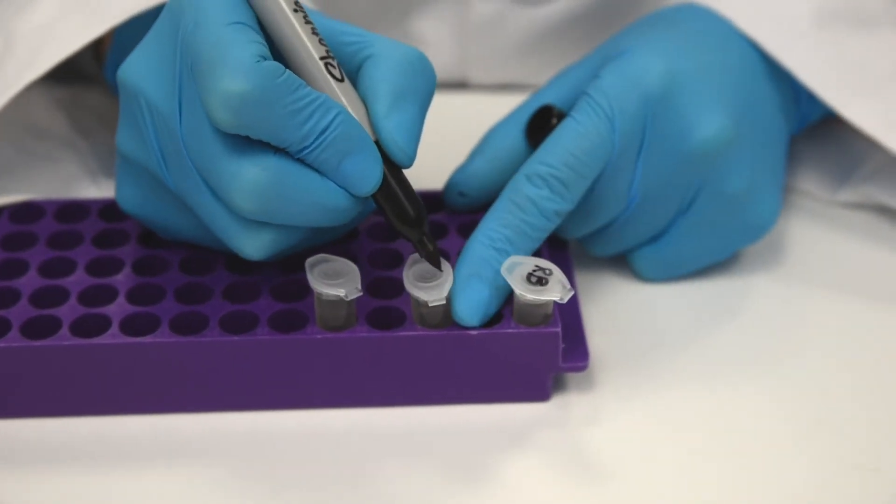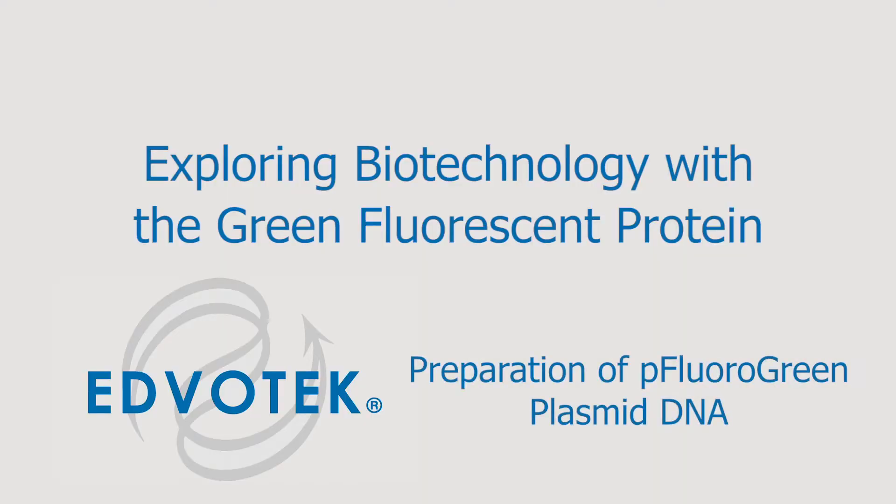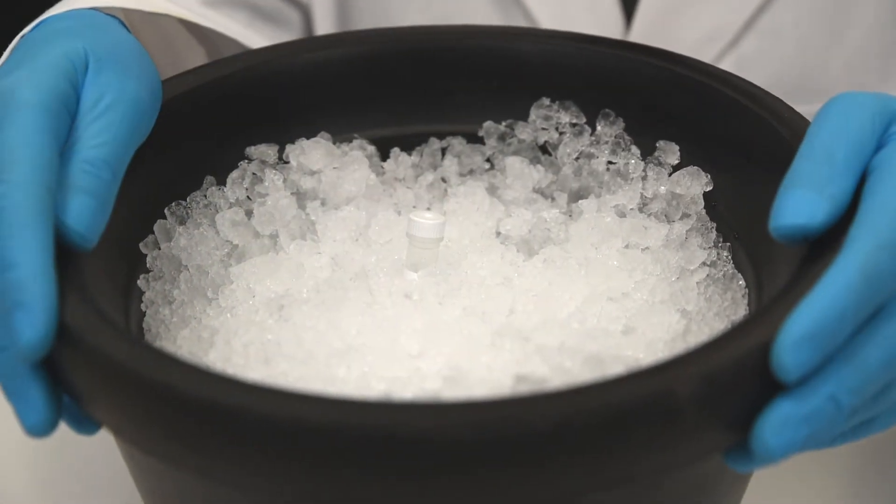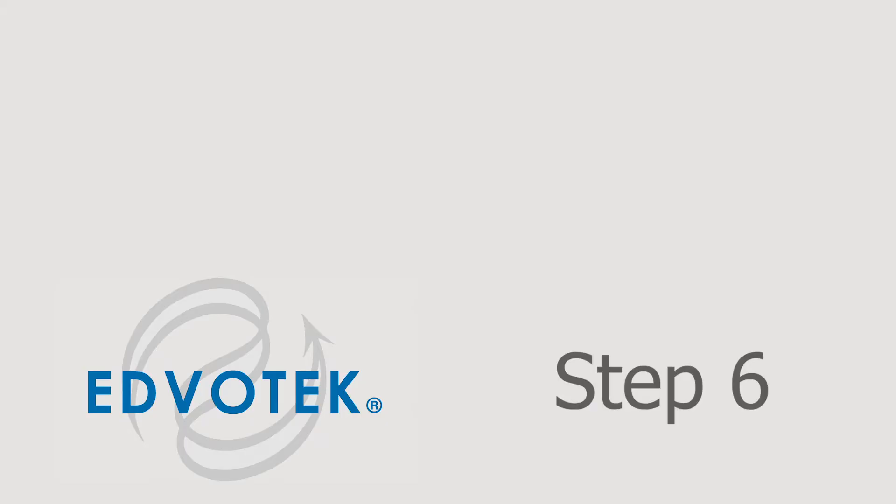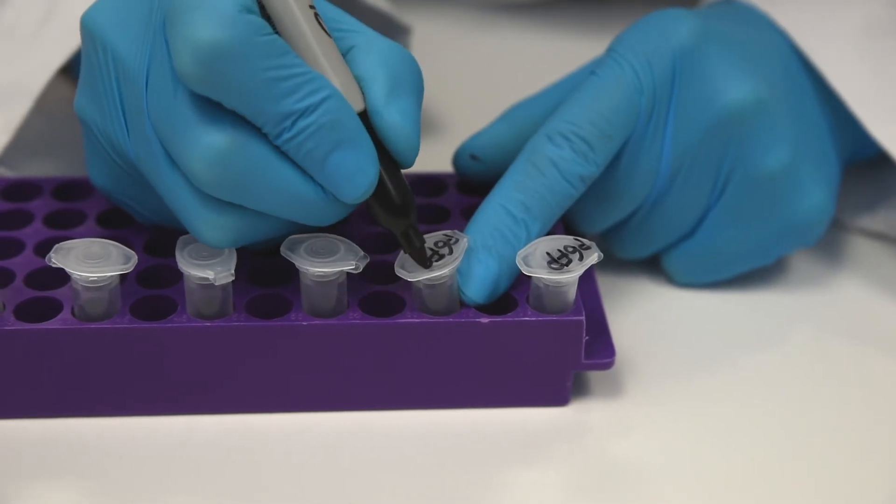Preparation of the pFluoroGreen plasmid DNA. Step 5: Place the tube of supercoiled pFluoroGreen on ice to thaw.